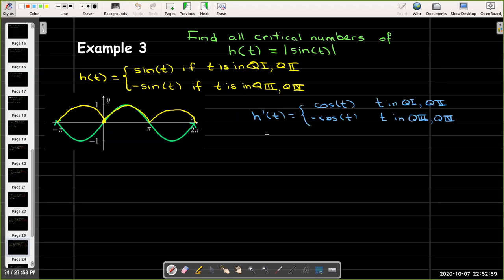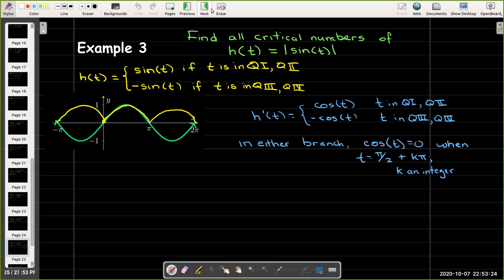So let's find what values of t are the critical numbers. Well, I can go ahead and use this formula for h and take the derivative. I'll get h prime of t is going to be cosine of t when t is in the first or second quadrant, and negative cosine of t when t is in the third or the fourth quadrant. And so in either case, if I set that equal to zero, I want cosine of t equal to zero, and that'll occur at any value of t, which is pi over two plus an integer multiple of pi.